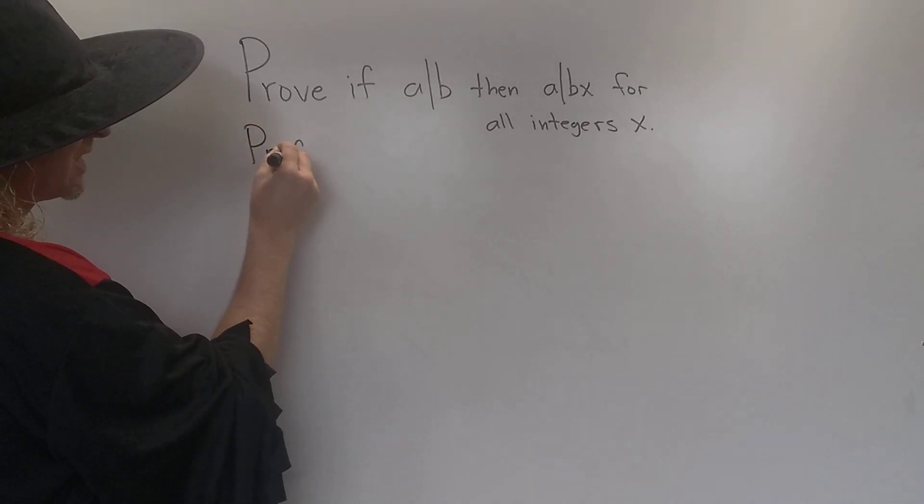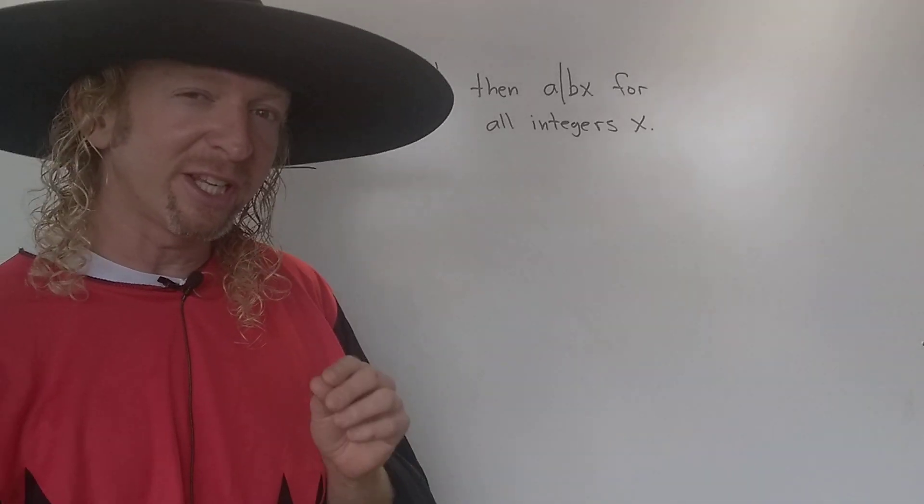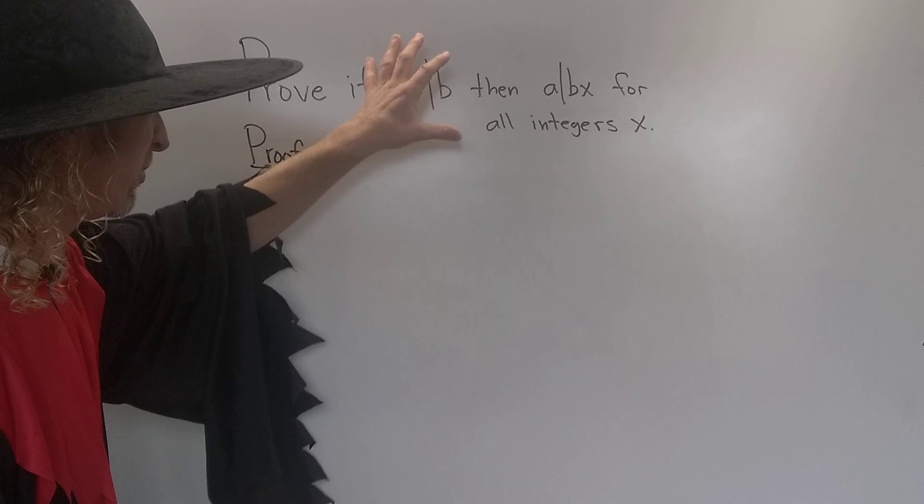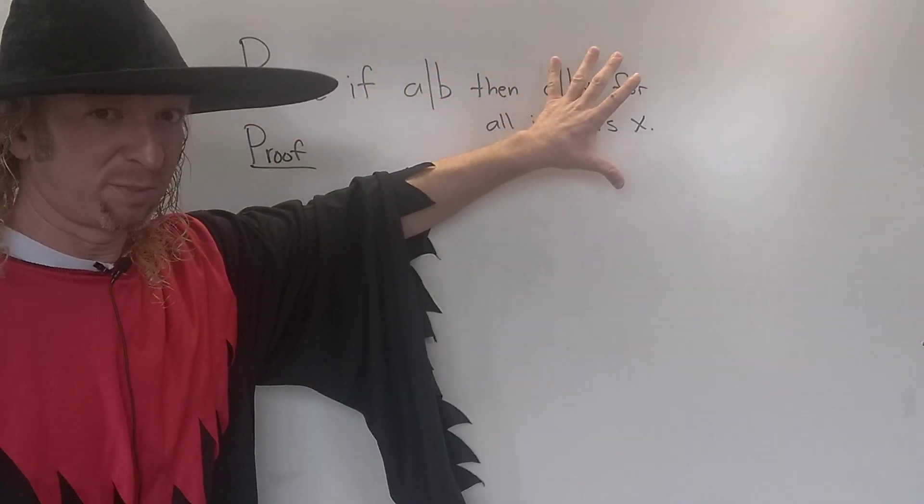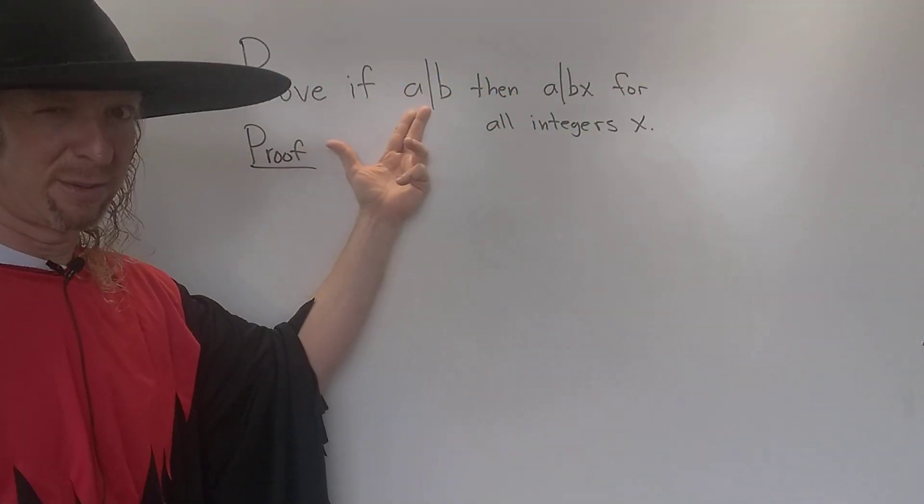Let's prove. So this is an if-then statement. When you're proving an if-then statement, you always assume this part here, and then you just have to prove this part here. So we'll start by writing down our assumptions.